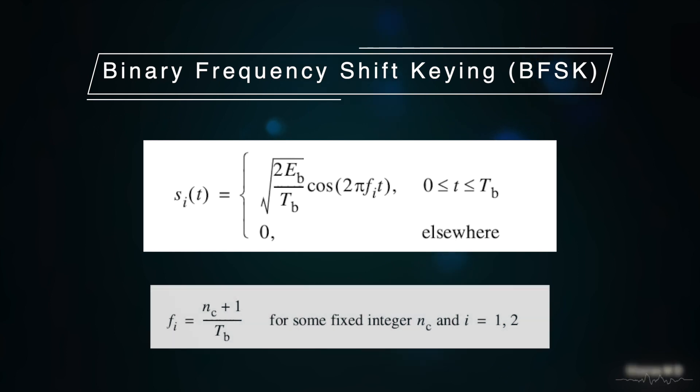These are based on the formula nc plus i by Tb, where nc is a standard starting frequency, i is the symbol number, and Tb is the bit duration. This symbol value is held between a time of 0 to Tb, that is one bit time. Other places the symbol will be 0.